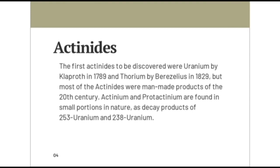Actinides ki baat ki jaye to the first actinide to be discovered was uranium. Yeh discover kiya tha Klaproth ne in 1789. Then thorium discover kiya tha Berzelius ne in 1829. But most of the actinides were manmade products of the 20th century. Two elements, actinium and protactinium, were found in small portions in nature as decay products of U-235 and U-238 uranium.